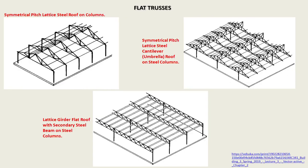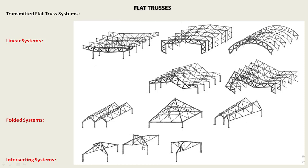Symmetrical piece: flat steel roof on columns; symmetrical piece: flat steel cantilevered roofs on steel columns; and finally, flat roof with secondary steel beam on steel columns. For the transmitted flat truss systems, we can divide them into three parts: the linear system, folded system, and intersecting systems.